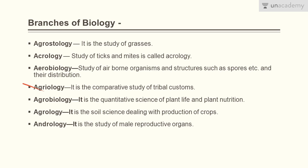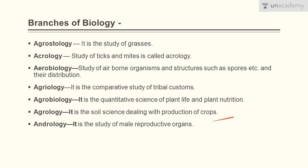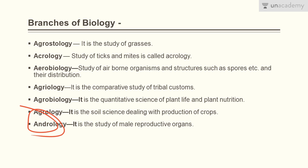Agriology is the comparative study of tribal customs. Agrobiology is the quantitative science of plant life and plant nutrition. Agrology is the soil science dealing with the production of crops. Andrology is the study of male reproductive organs — you can relate it to androgens.